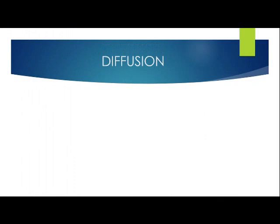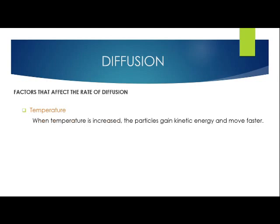Diffusion is affected by some factors. These factors cause diffusion to be either fast or slow. The first factor we'll look at is temperature. When temperature is increased, particles gain kinetic energy and move faster. If temperature is decreased, the opposite happens.